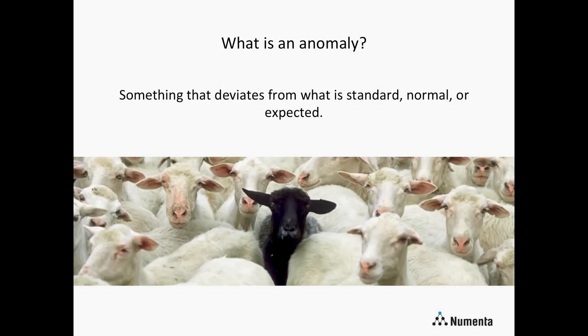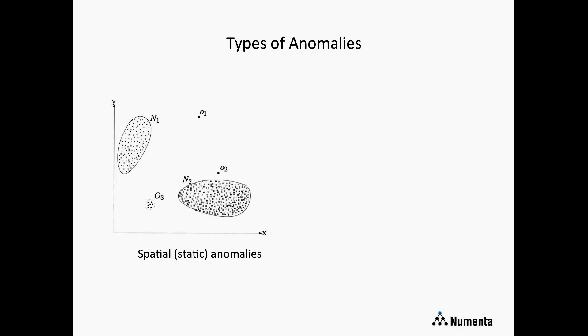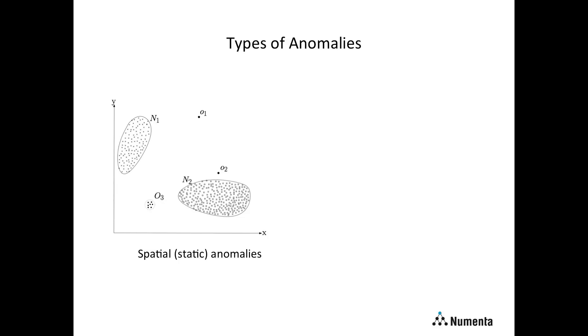What is an anomaly? It's something that deviates from what is standard, normal, or expected, and there are a couple different types. Static or spatial anomalies are those in which the value is unusual independent of any temporal context in which it occurs. Here's an example where we've taken a set of values and plotted them on a chart and used a clustering technique to identify outliers — this is one way to do spatial or static anomaly detection.